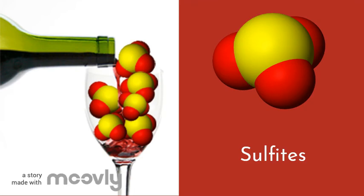One of the most common modern preservation techniques, theorized to have been initially used by the ancient Greeks, is the use of sulfites. Volcanic sulfur dioxide was discovered to be alcohol soluble and observed as a disinfectant. This was applied to wine and it halted the fermentation process and prevented wine from further fermenting into vinegar. This is an additive that is still very prevalent in modern winemaking.